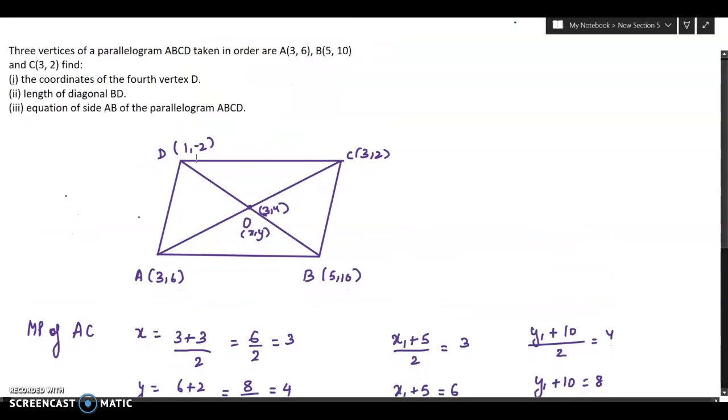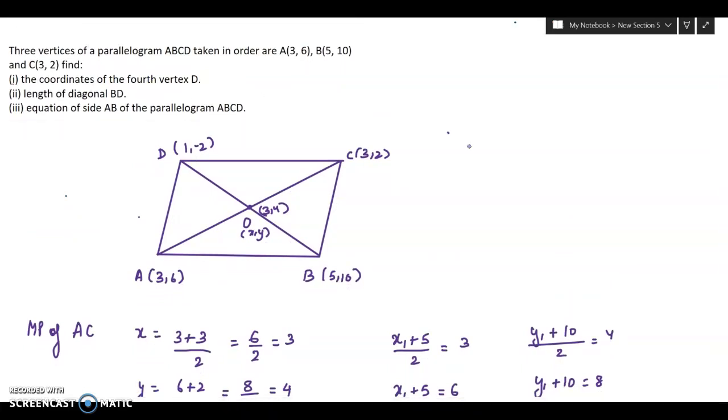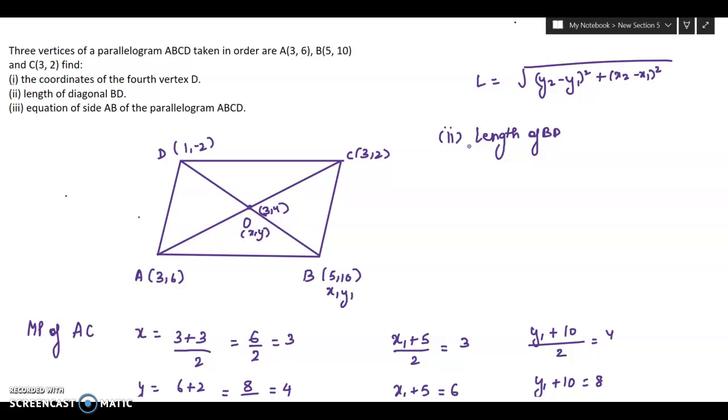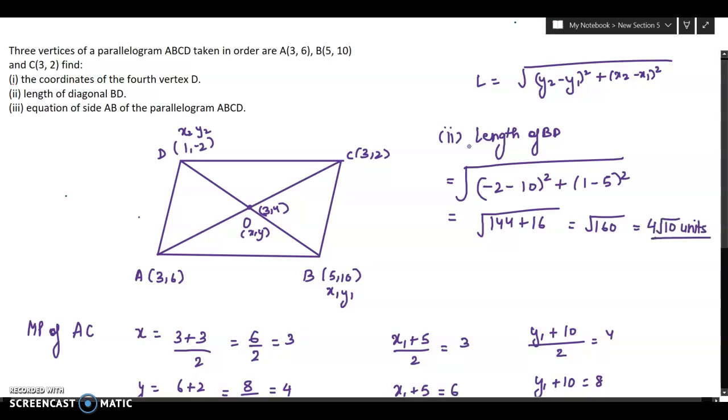Second part is the length of diagonal BD. You know the formula of length: it is under root of y2 minus y1 whole square plus x2 minus x1 whole square. I can take B as x1, y1 and D as x2, y2. This will be under root of y2 minus y1 whole square plus x2 that is 1 minus x1 whole square. This will be 144 plus 16, that means under root of 160. So answer is 4 root 10 units.